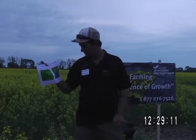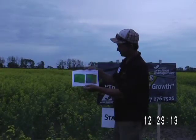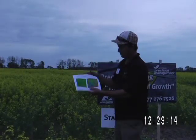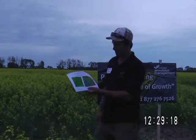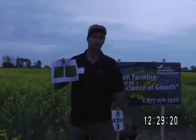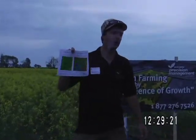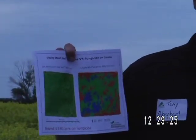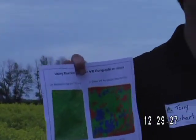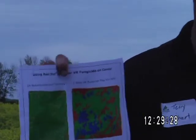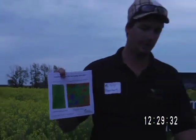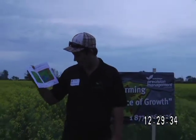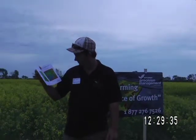In this particular case, the blue areas on the map are where we applied a full rate of fungicide, the green areas where we applied the lower label rate of fungicide, and the red areas where we shut the booms right off because there was very little crop — it was poor and didn't warrant a fungicide application.